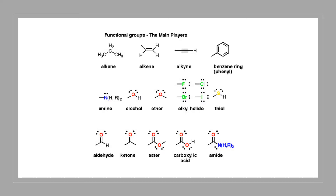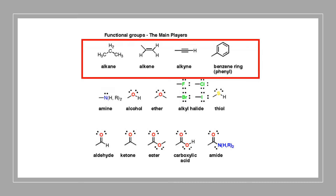Let's take a look at the first group: alkane, alkene, alkyne, and benzene ring. If you take a look at the first three, they all have the same three letters: A-L-K. The only difference is the ending, and the ending is where you can look more closely and use to help you remember the names.